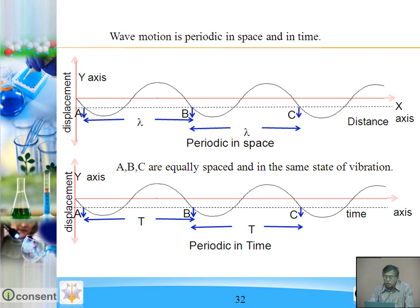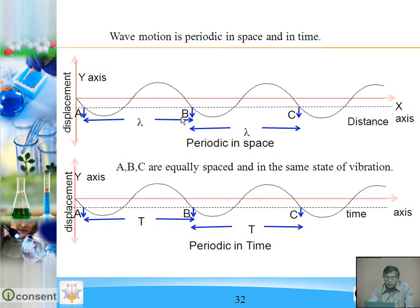Wave motion is periodic in space. Points A, B, and C start vibrating in the downward direction, while another point vibrates in the upward direction, so they are in opposite directions — not in phase. But A, B, and C are equidistant from each other and start vibrating in the same direction — they are in the same phase.